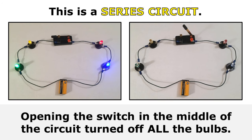This is a series circuit and you can see on the left that electricity is able to travel through the entire circuit and all the light bulbs are glowing. But when I open the switch, I create a gap in the middle of the circuit. Opening the switch turned off all the bulbs. In a series circuit, it does not matter where the gap happens — if you get a gap anywhere, the entire circuit stops working.